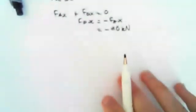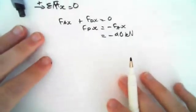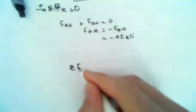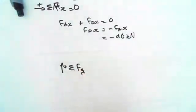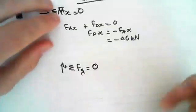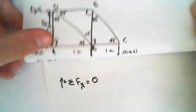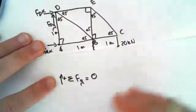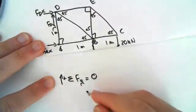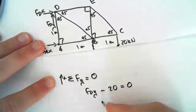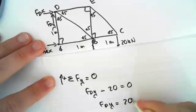So now we want to get what FDY is. So we can do sum of the forces in the y-direction. I'll do positive is up. So sum of FY equals zero. So you can see, let's fold this over so we can see the diagram. The forces acting in the y-direction are just FD and it's 20. So we have FDY minus 20 equals zero. FDY equals 20 kilonewtons.